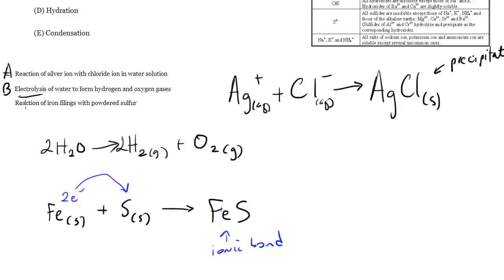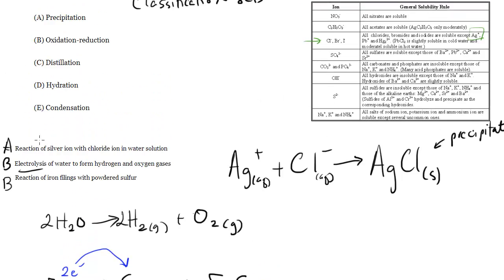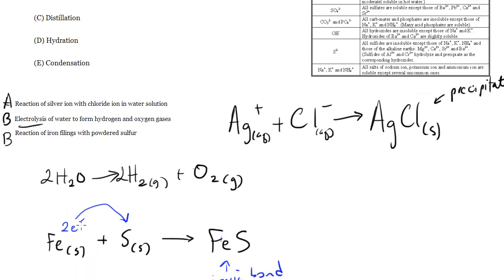But since we have a transfer of electrons, whenever you hear that phrase, again you should think of oxidation-reduction. So this is actually another example of an oxidation-reduction reaction because in this process of reaction, iron has to transfer 2 of its electrons to sulfur in order to link together as such.